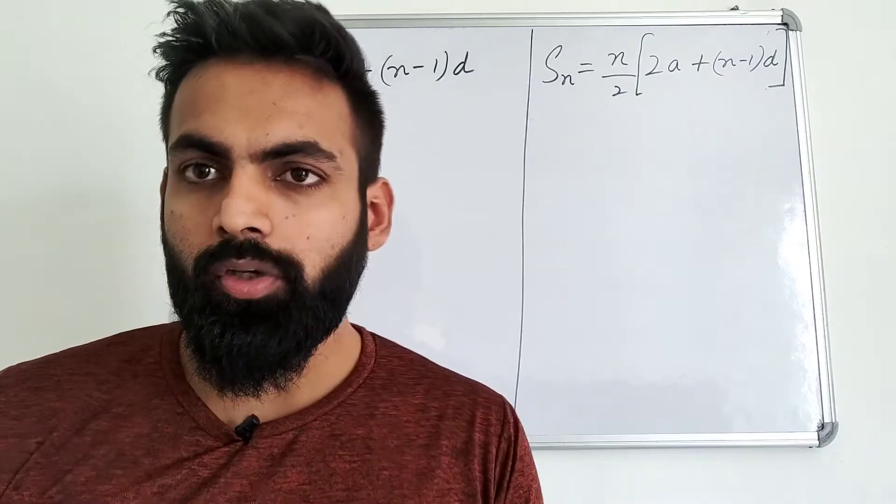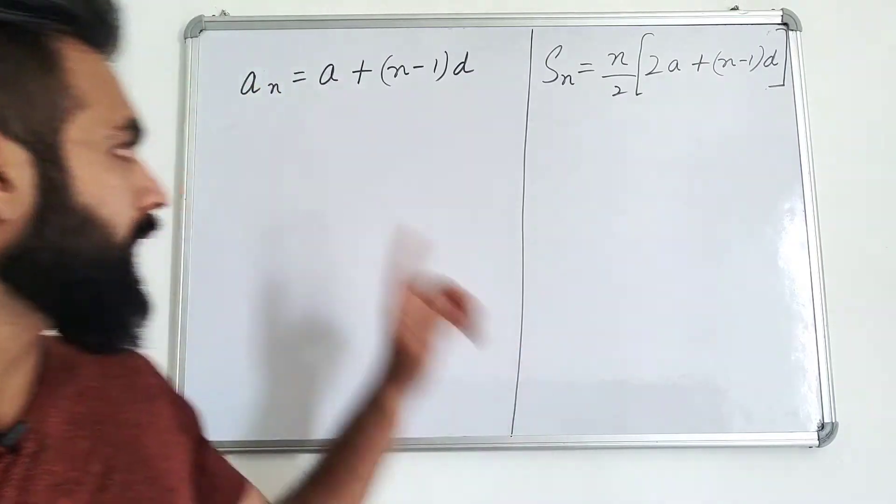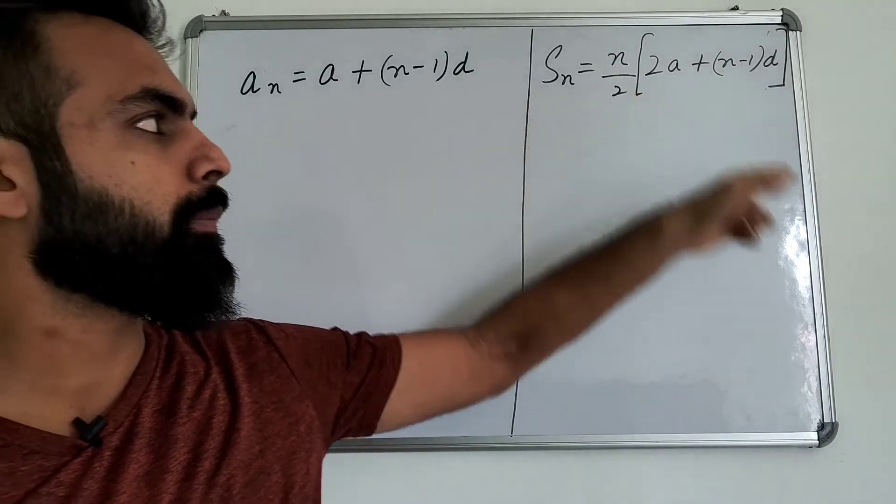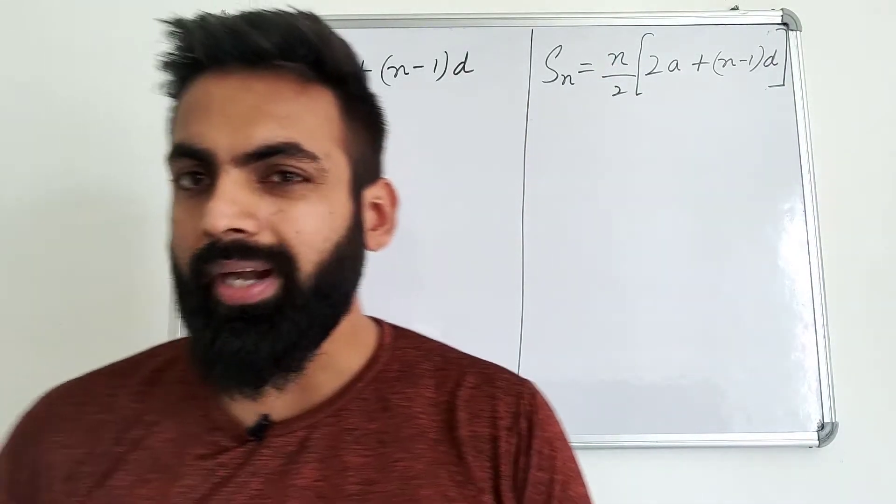So let us start. Look, you have learned two formulas in AP. First, an, that is nth term: a plus n minus 1 into d. Second, Sn, that is n by 2, 2a plus n minus 1 into d. So let me begin with a question.